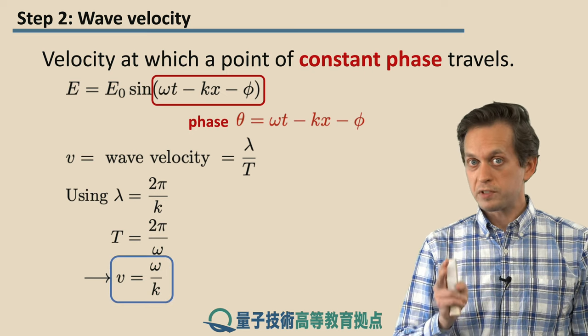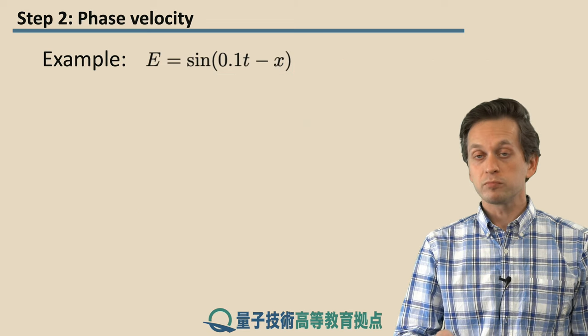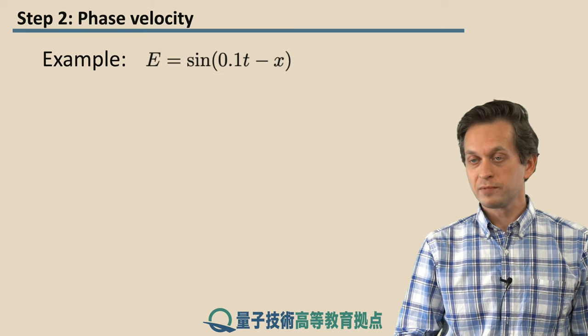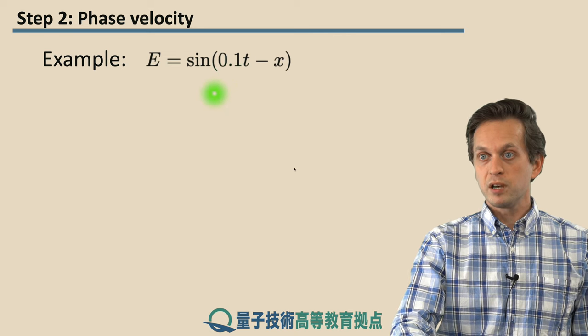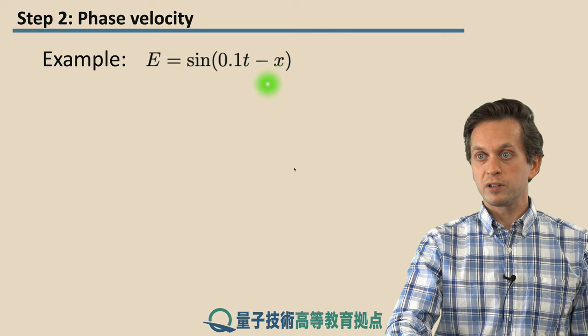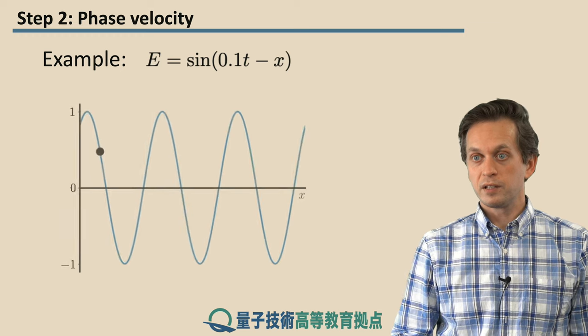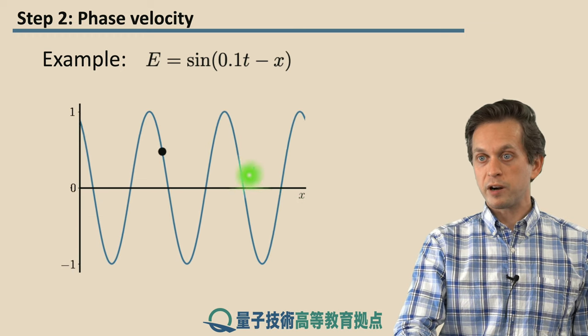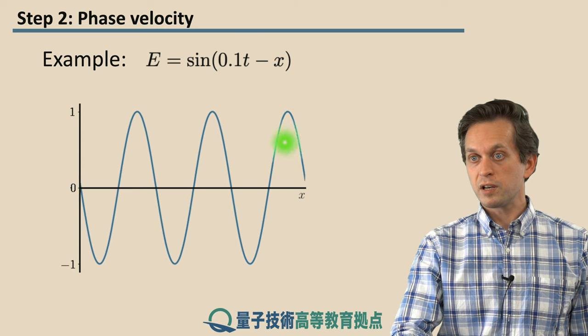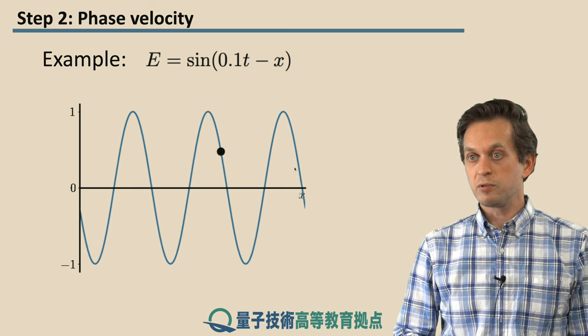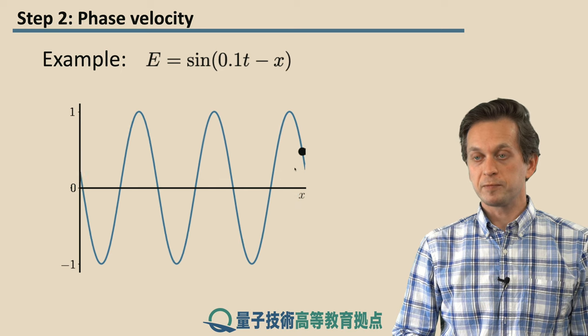Let's consider when we have two waves that superpose together. Before we do that, let's look at an example. So we have a wave propagating at angular frequency 0.1, and the wave number is 1. And as you can see, I marked one black point here. This is a point of constant phase, and it's propagating through space like that.